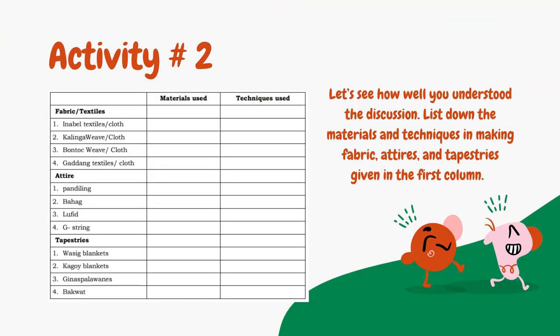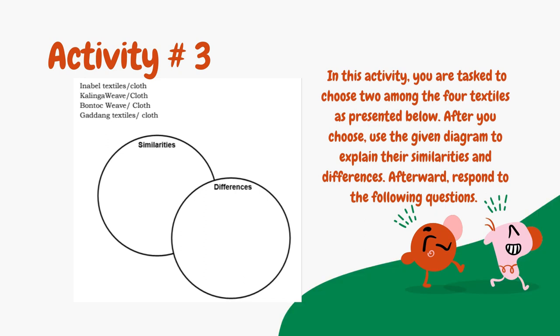Before we continue, let's see how well you understood the discussion. For Activity 2, list down the materials and techniques in making fabric, attire, and tapestries given in the first column. On the second column, write all the materials used. On the third column, write all the techniques used. For Activity 3, choose two among the four textiles presented, use the given diagram to explain their similarities and differences, then respond to the following questions: How would you discuss the elements used in the artwork you have chosen? Why did you choose the two textiles, and what elements make them similar and different?